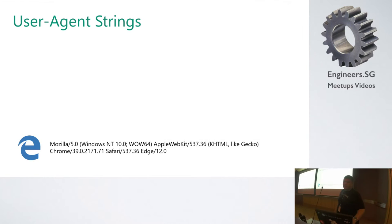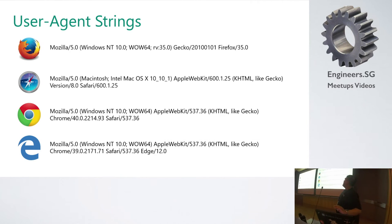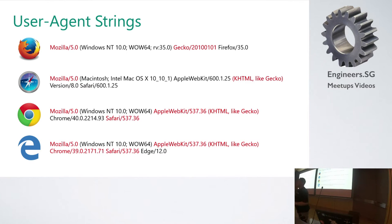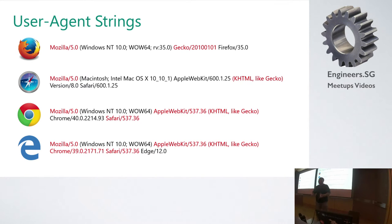The user agent string is a pack of lies. Look at this: Mozilla 5.0, Netscape 6, 1997 — seriously? Some web developers do UA sniffing. That's the problem. They sniff: if Chrome do like this, if Mozilla do like this, if Edge do like this, if IE do like this.